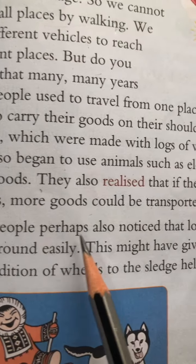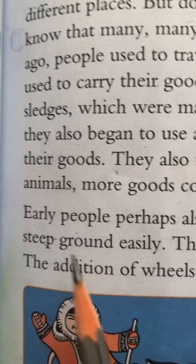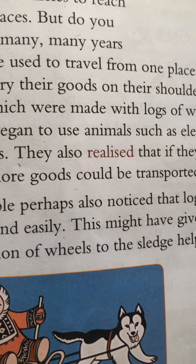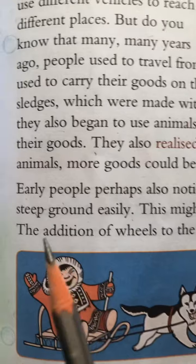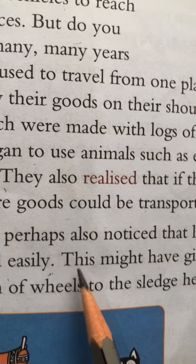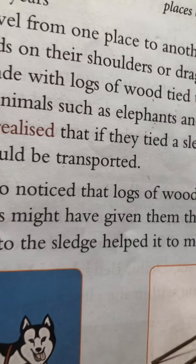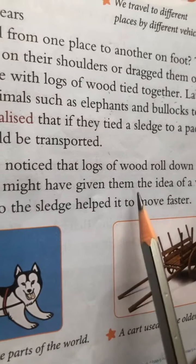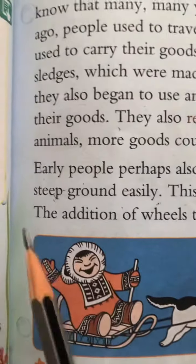Early people perhaps also noticed that logs of wood roll down steep ground easily. Unlogo ko realize hua ki jo wood ke logs hote hain woh round hote hain aur easily roll down hote hain, toh woh ground se easily aage badh sakte hain. Yeh pehle ke logon ko notice hua. This might have given them the idea of a wheel — jab unhone logs ko roll down karte dekha toh unke mind mein suddenly ek idea aaya.